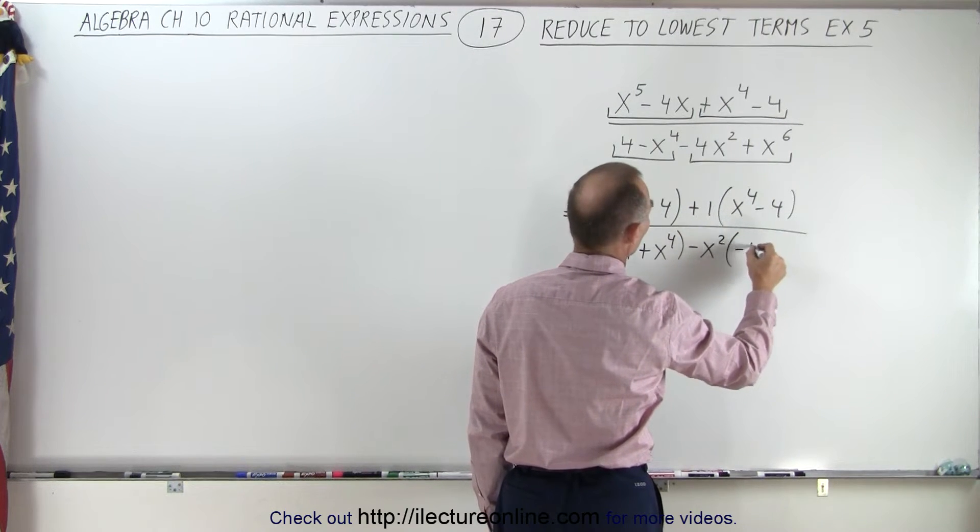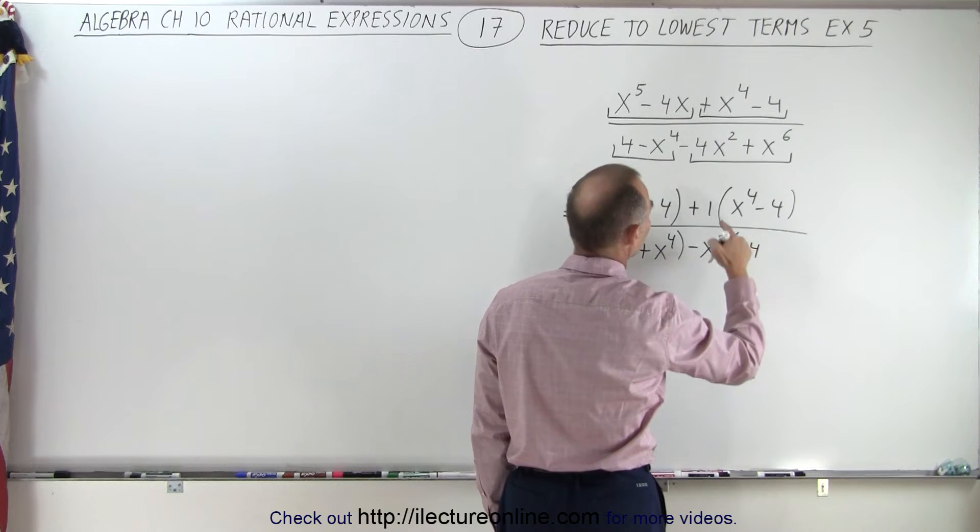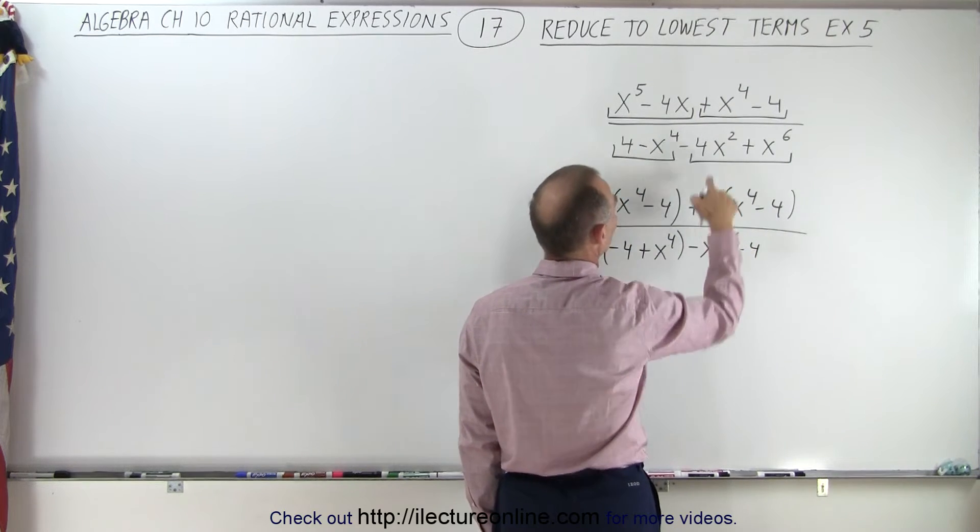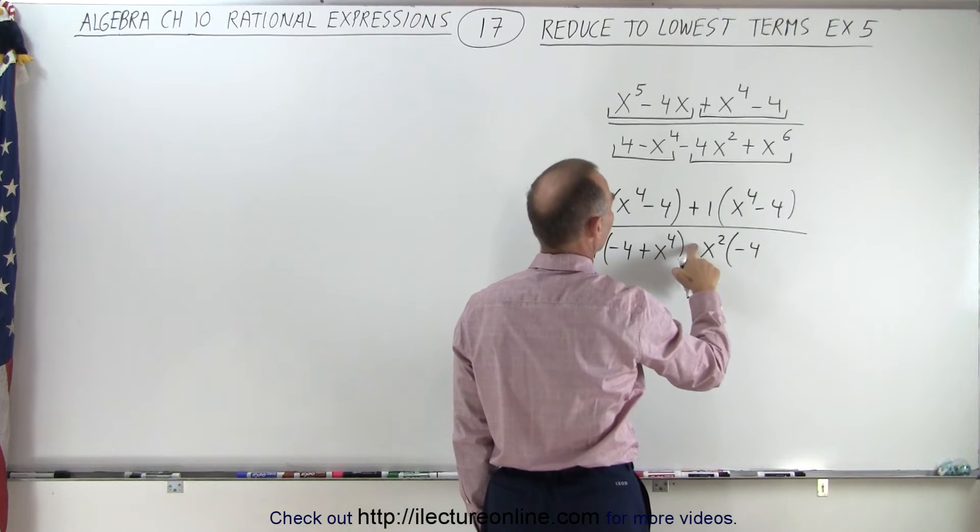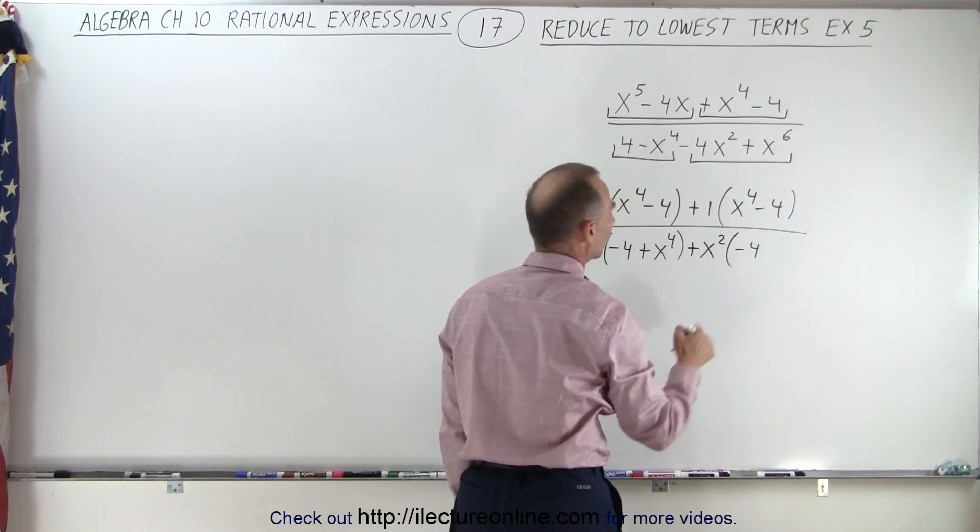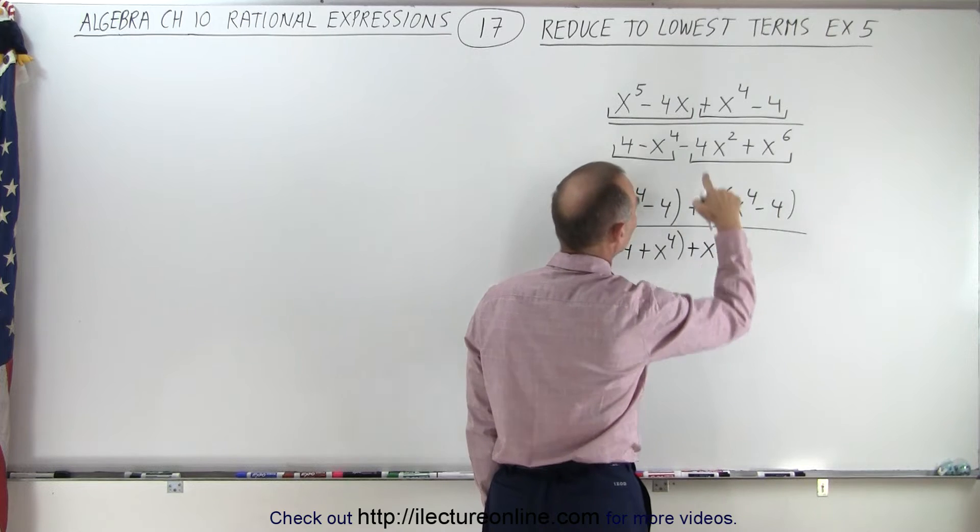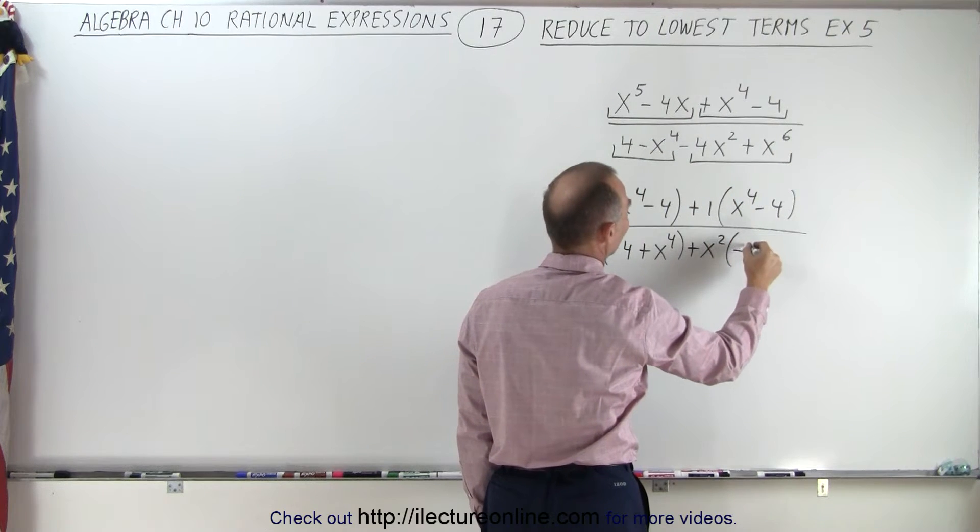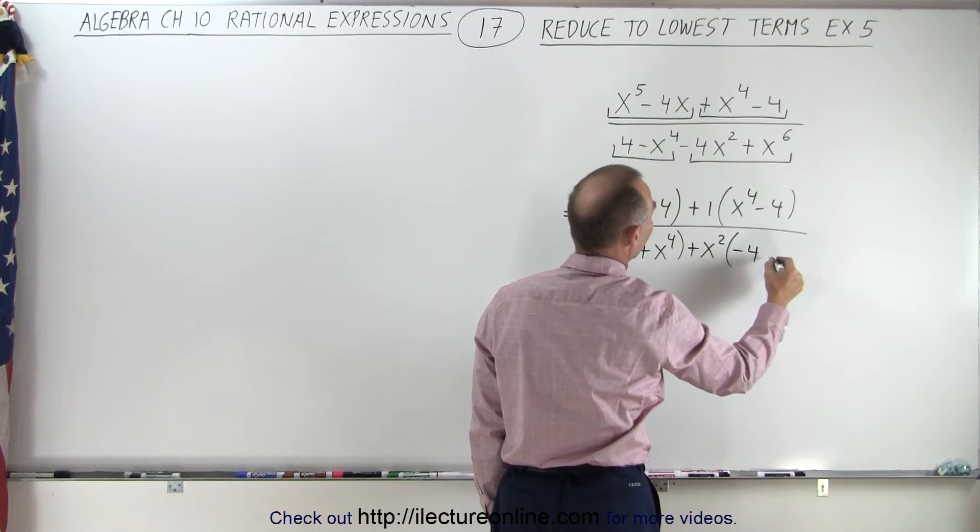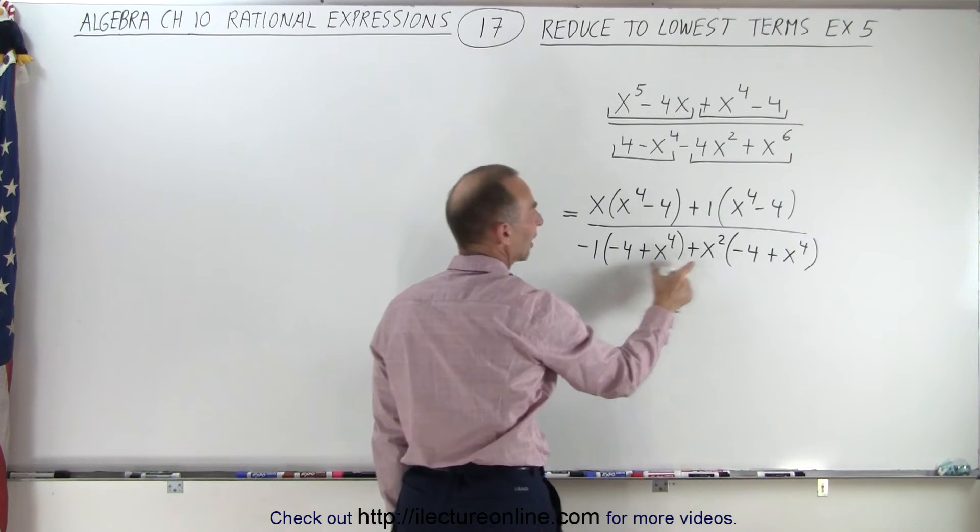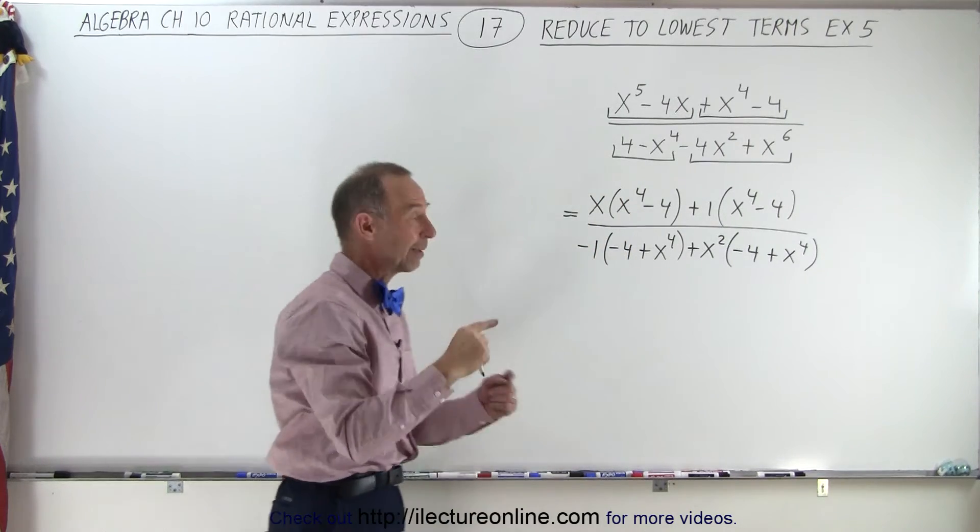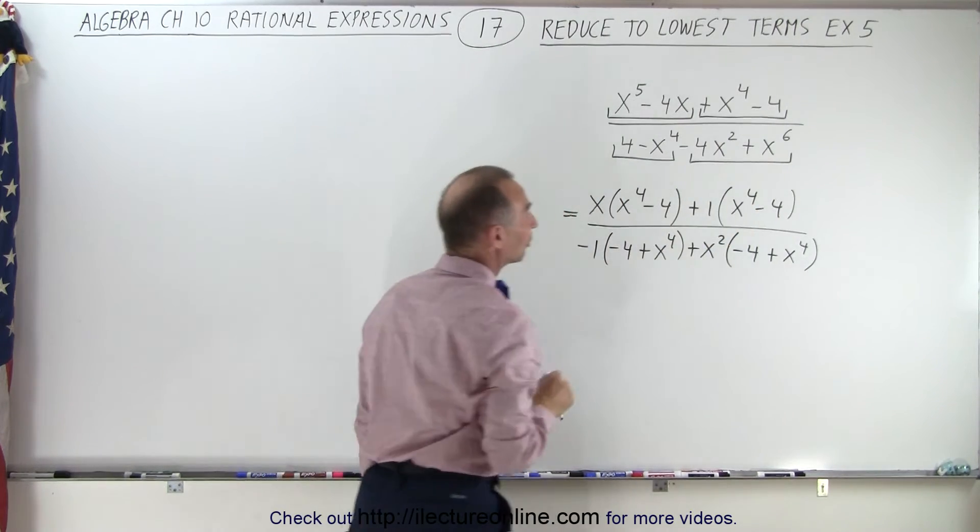That leaves us with a minus four and a four. We don't want that. We're going to factor out a positive x squared instead, because what I want is a negative four and a positive x to the fourth. There we go. And now you can see that these look exactly the same as well, except in reverse order with what we have in the numerator.